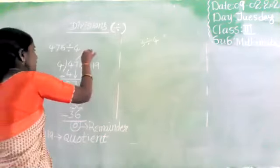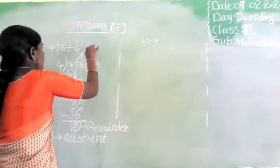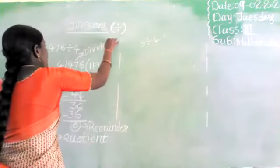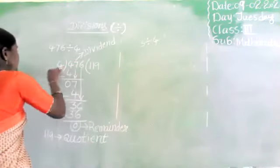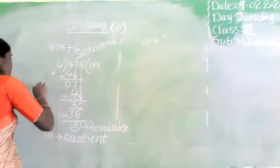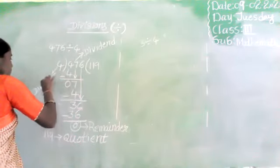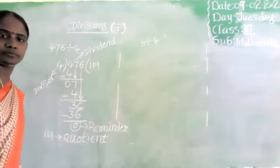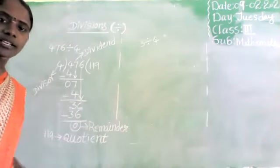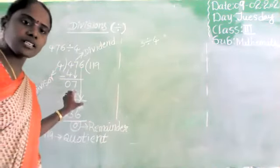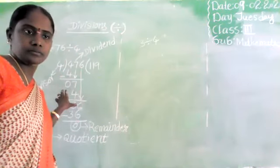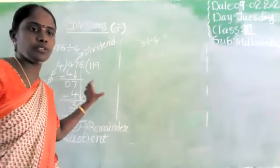So 476 is the dividend, 4 is the divisor, the quotient is 119, and the remainder is 0. Did you understand, children? Let me do one more problem.